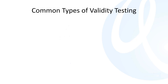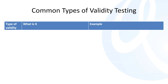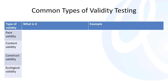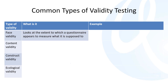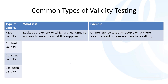When it comes to validity, there are several common types of validity testing. These can be split into face validity, content validity, construct validity, and ecological validity. Face validity looks at the extent to which a questionnaire appears to measure what it is supposed to. So if an intelligence test asks people what their favourite food is, it probably does not have face validity. Often this is achieved by giving the questionnaire to experts in the field to ensure they believe it is measuring the right things.